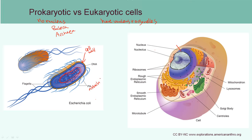On the right, we have a typical animal cell. Animal cells do have a nucleus — that large blob is the nucleus, and it is where the DNA is kept inside a membrane. There's also an internal structure within the nucleus called the nucleolus. All of the other labeled parts are organelles with unique functions inside the cell.